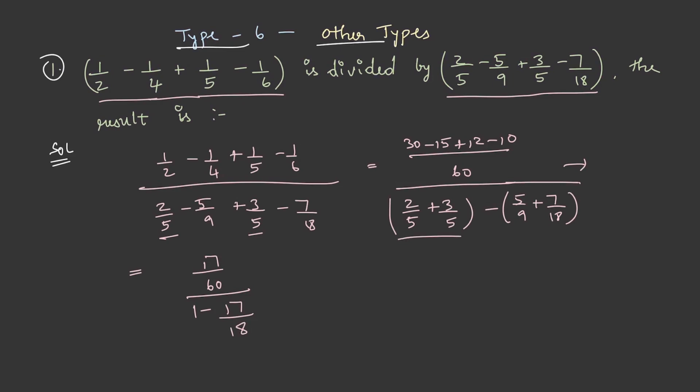This is equal to 5 by 5, which is equal to 1. Now, 17 by 60 into 18 - on bringing this above we get 18 here - and this is equal to 51 by 10. If we write it in mixed fraction, it is 5 and 1 by 10. This is the answer.